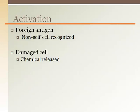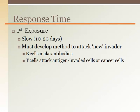B cells and T cells of the acquired immunity or specific defenses are activated under two conditions: an antigen must be present, and there must be the release of chemicals from a cell that has been invaded or damaged. The response time to eliminate an antigen is very slow upon first exposure. It takes 10 to 20 days for the acquired immunity or specific defenses to mount an adequate response to eliminate the offending antigens.